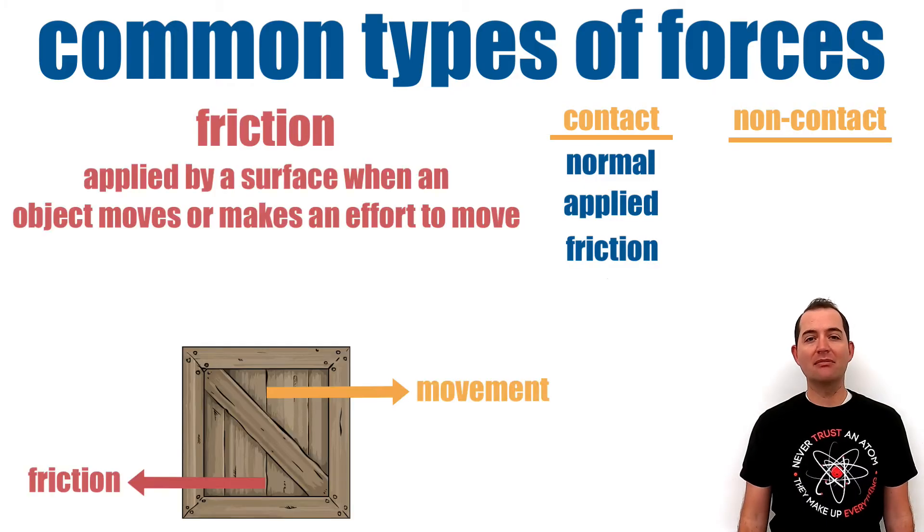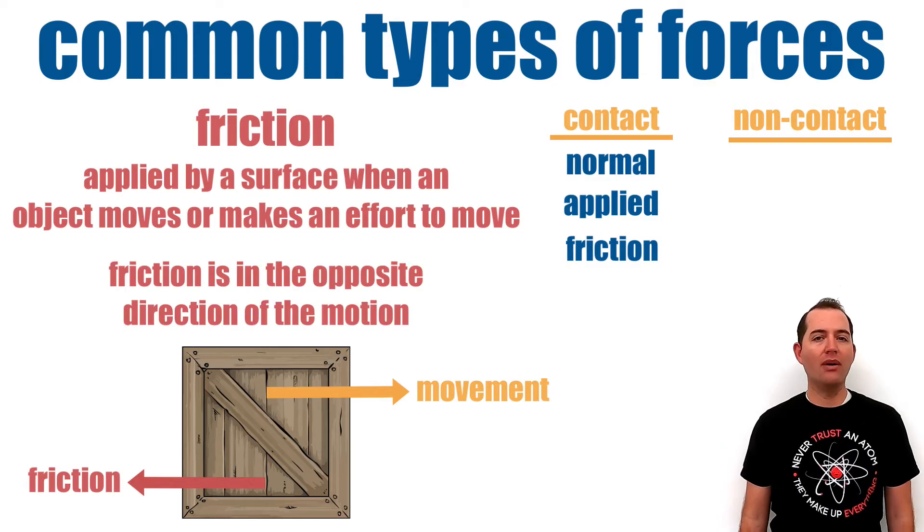Friction is a force that is applied by a surface when an object moves across it or makes an effort to move across it. Friction will always be in the opposite direction of the motion.